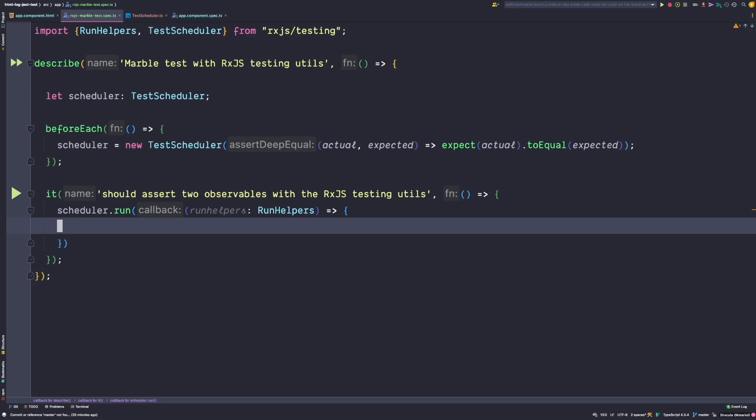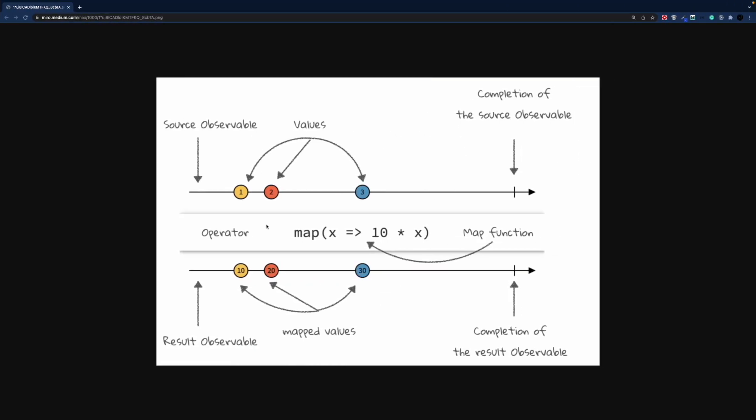Do you remember the graphic that I showed you at the beginning of this video? This is basically our test case. We want to write a test with a source observable that emits three values — 1, 2, 3 — then uses the map operator to multiply each of those values by 10, which results in a resulting observable that emits the values 10, 20, 30.